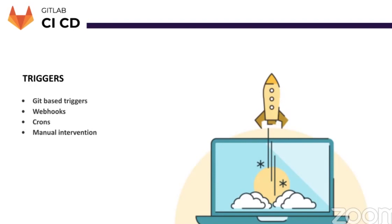GitLab also has a provision for manual intervention by authorized users. In the GitLab YAML file, you can specify a part of your pipeline to run only after somebody with access in the team resumes the job from the UI. This feature enables constructing workflows where everything except deployment can be automated, and only after manual intervention does the deployment take place. I will show you how to do this in practice in the demo.